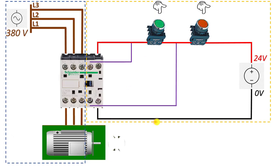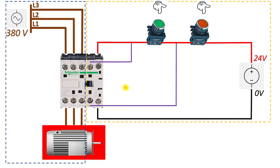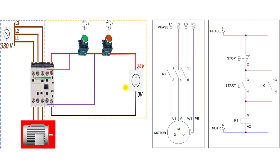Let's simulate this. When I press the start button, the circuit is completed via A1 and A2, and the motor starts running. If I take my hand off the start button, the circuit continues to be completed via the auxiliary contact. When I press the stop button, I stop the system.